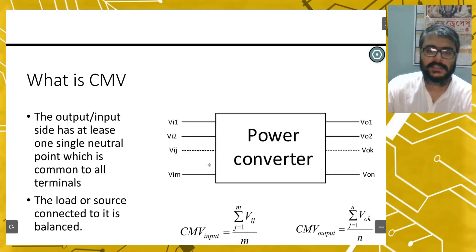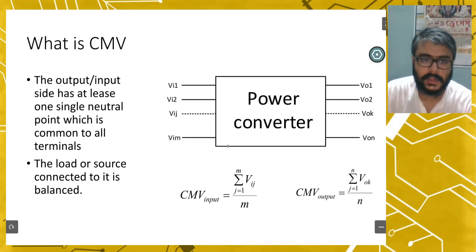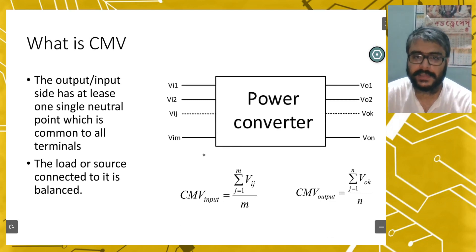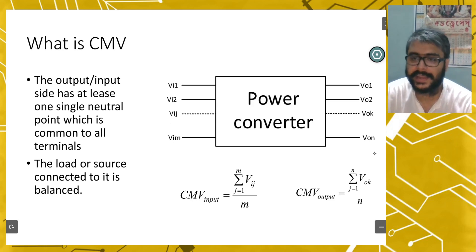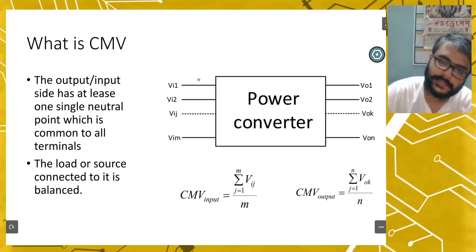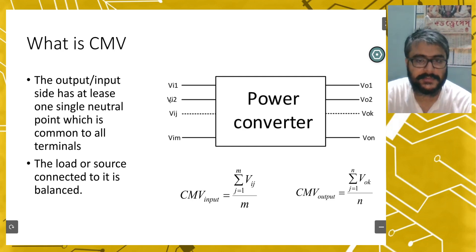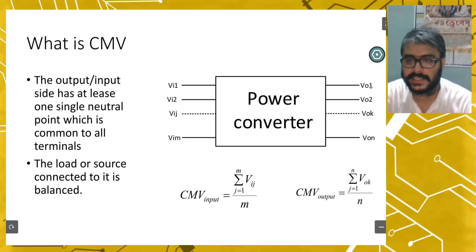So, what is common mode voltage? Let's take an example of a power converter which is shown here. It has M number of input terminals and N number of output terminals. The input terminal voltages are Vi1, Vi2, up to ViM. And the output terminal voltages are Vo1, Vo2, VoN like that.